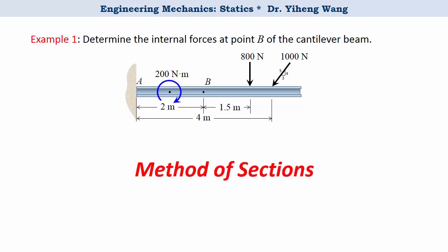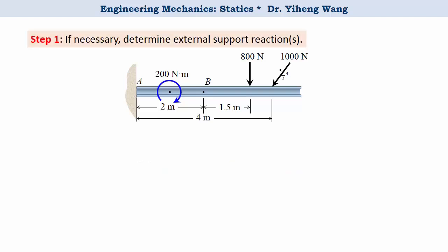Let's look at the proper procedures. First step: determine the external support reactions and complete the free body diagram of the entire member if necessary. Sometimes it's not necessary, but for now, let's solve them. At point A we have a fixed support with three support reactions—two forces and a couple moment—and we can solve for all of them by applying rigid body equilibrium analysis.